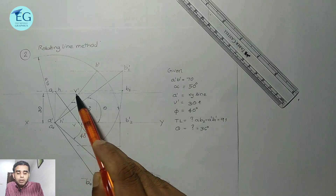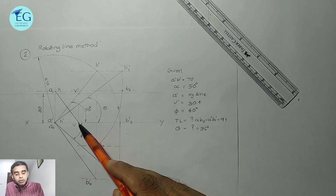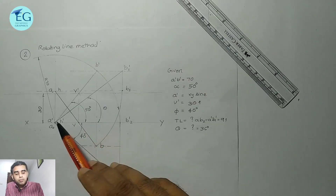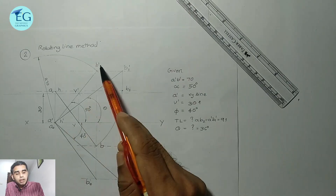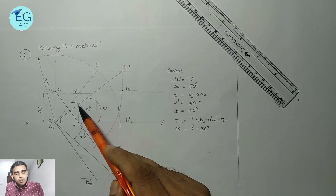Next, locate the vertical trace of the top view V on the XY line. A'B' is then located accordingly with V' at 30 mm above the XY line.